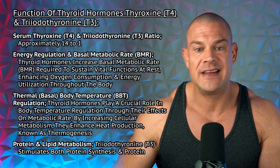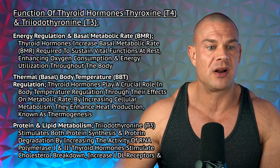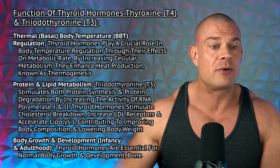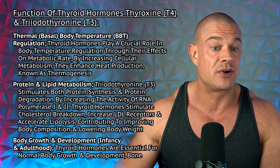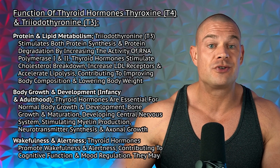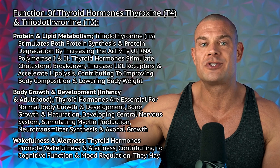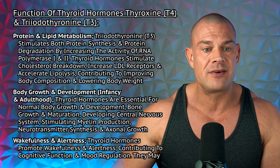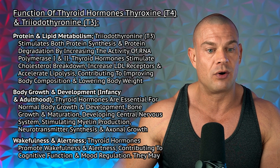The ratio of T4 to T3 in serum is approximately 14 to 1. Thyroid hormones contribute to energy regulation and basal metabolic rate — they increase basal metabolic rate required to sustain vital functions at rest, enhance oxygen consumption, and increase energy utilization throughout the body. They play a crucial role in body temperature regulation through their effects on metabolic rates, increasing cellular metabolism and heat production, known as thermogenesis. Thyroid hormones also contribute to protein and lipid metabolism. T3 stimulates both protein synthesis and protein degradation — something we're trying to avoid — by increasing the activity of RNA polymerase 1 and 3. Thyroid hormones stimulate cholesterol breakdown, increase LDL receptors, and accelerate lipolysis, which is something we definitely want for controlling lipid levels and improving fat loss. They also contribute to improving body composition and lowering overall body weight.